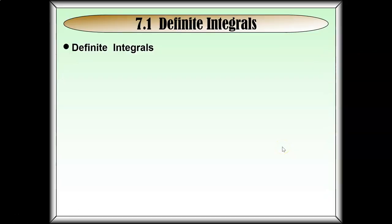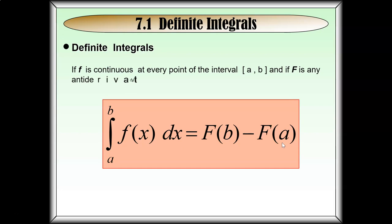So let's see what is a definite integral. If the function f is continuous at every point of the interval [a, b], and if capital F is any antiderivative, you will have the definite integral written as the integration of f(x) dx from a to b, equal to capital F(b) minus capital F(a). Capital F(b) means you substitute the value of b into x.